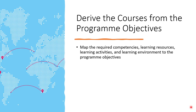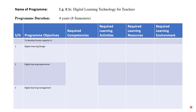Now, deriving courses from the program objective — what you do is map. You have your program objective already set, so you map it with the defined learning resources, the competencies required, and the learning environment needed to meet the program objective. Let's quickly look at a sample.